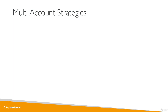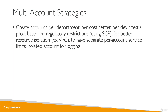You can have a multi-account strategy in AWS, meaning you create accounts per department, per cost center, or per environment — for example, dev, test, and prod — based on regulatory restrictions. If you don't want a service used in an account, you can use an SCP. You can also isolate resources better with different VPCs in different accounts, set separate per-account service limits, and have isolated accounts for logging.